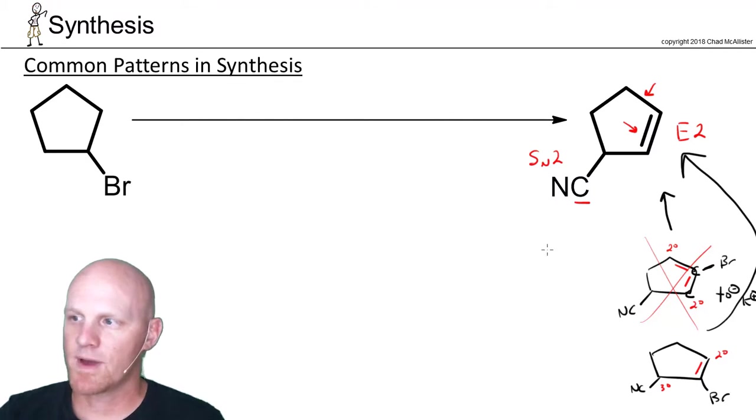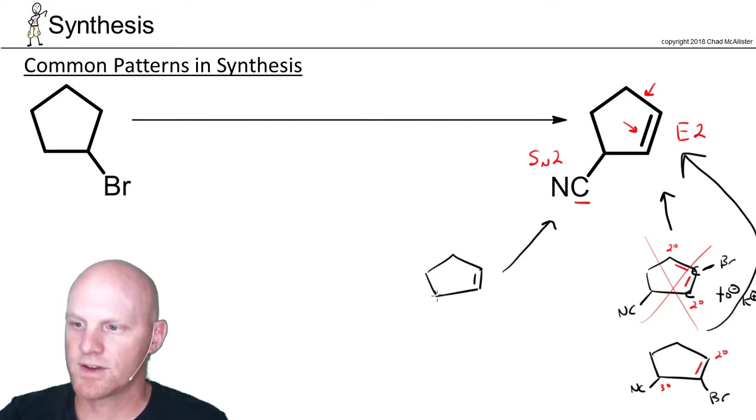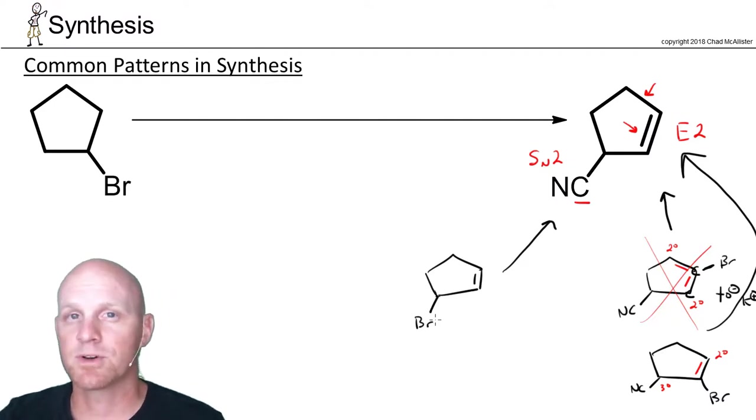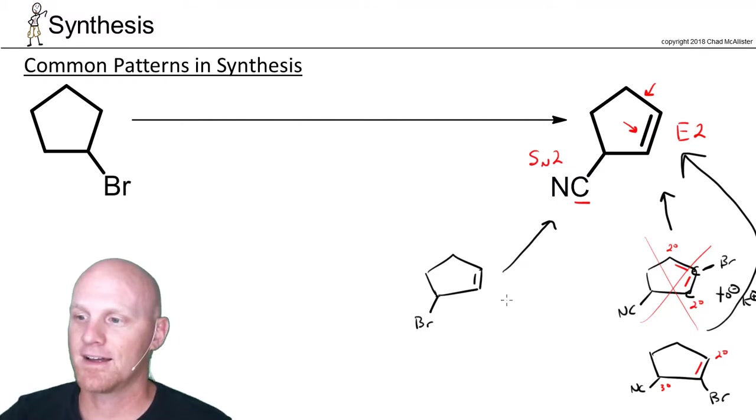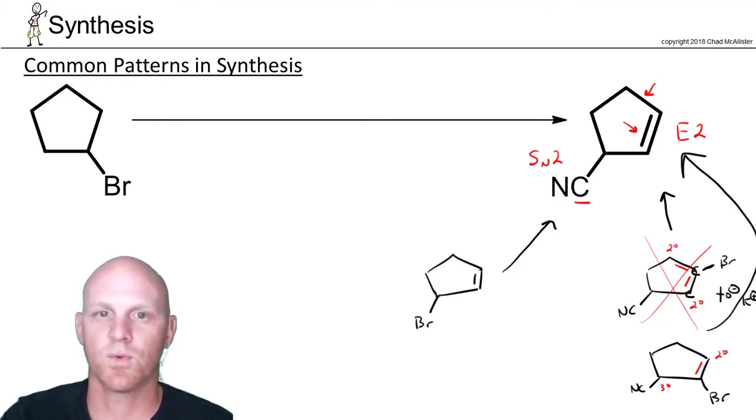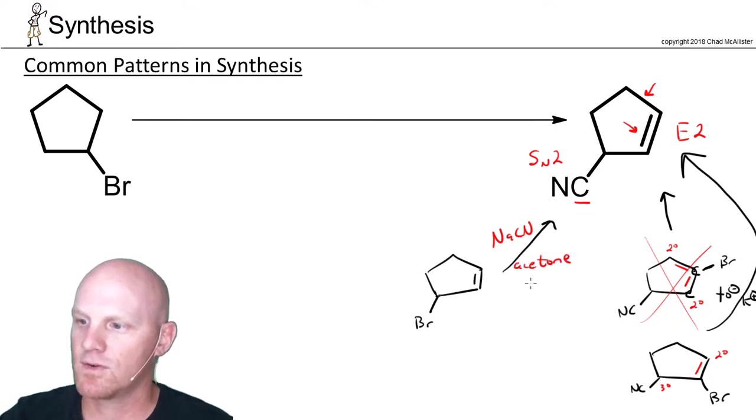Okay, so that's an option. So the other thing we might consider, instead of doing E2 as the last step, we might consider doing SN2 as the last step as well. And if that were the case, we'd already have the alkene, so in this case we'd be wanting to add the cyanide in a substitution reaction for a good leaving group. And again, in synthesis your most likely good leaving group is going to be bromine. And in this case we would just simply want to add something like NaCN in a good aprotic solvent like acetone.